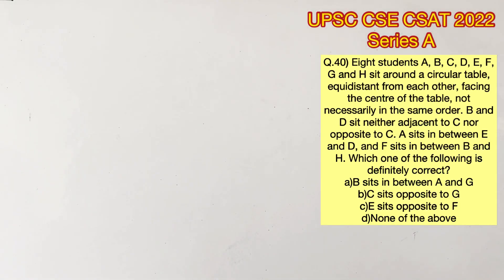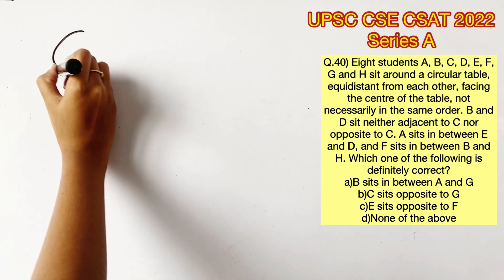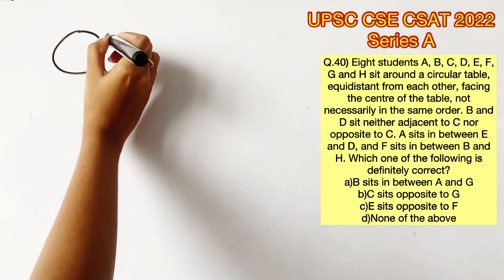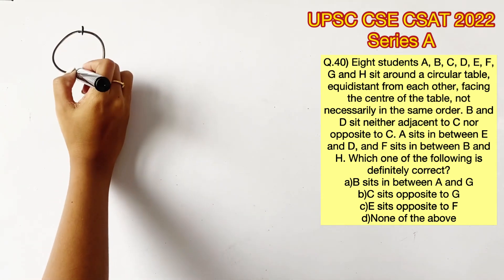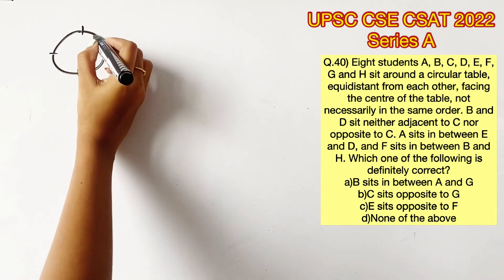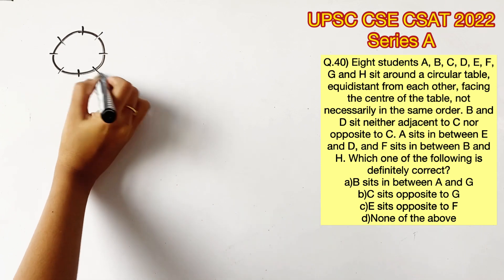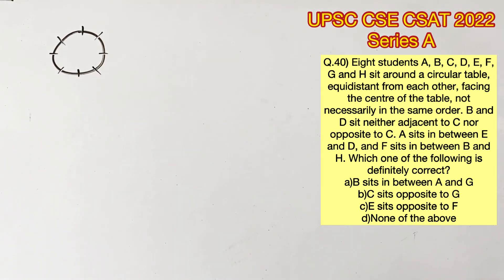Please pause the video and read the question completely. The question says 8 students are sitting around a circular table equidistant from each other facing the center. This is how 8 people can be arranged equidistant from each other.